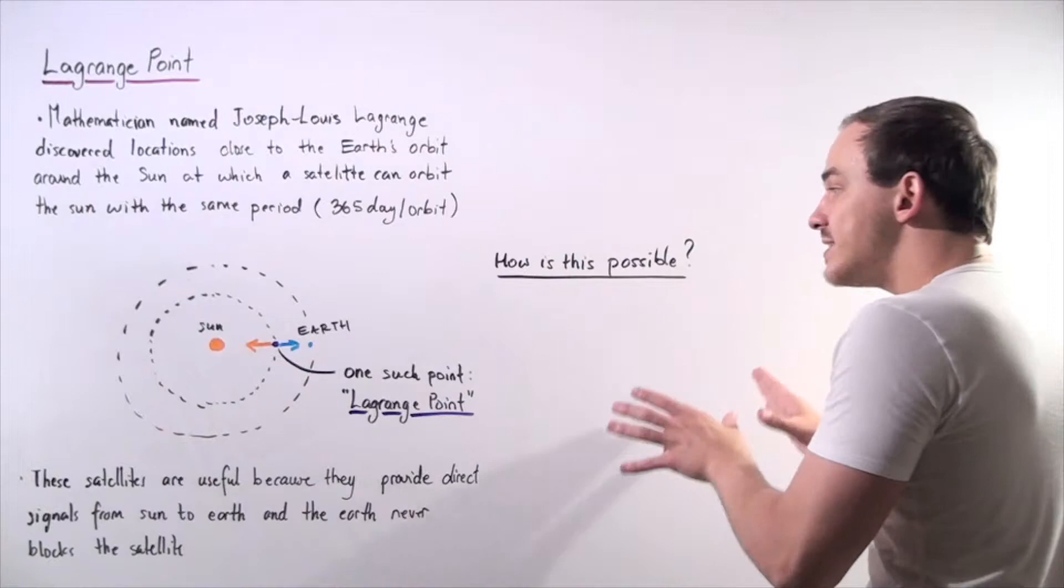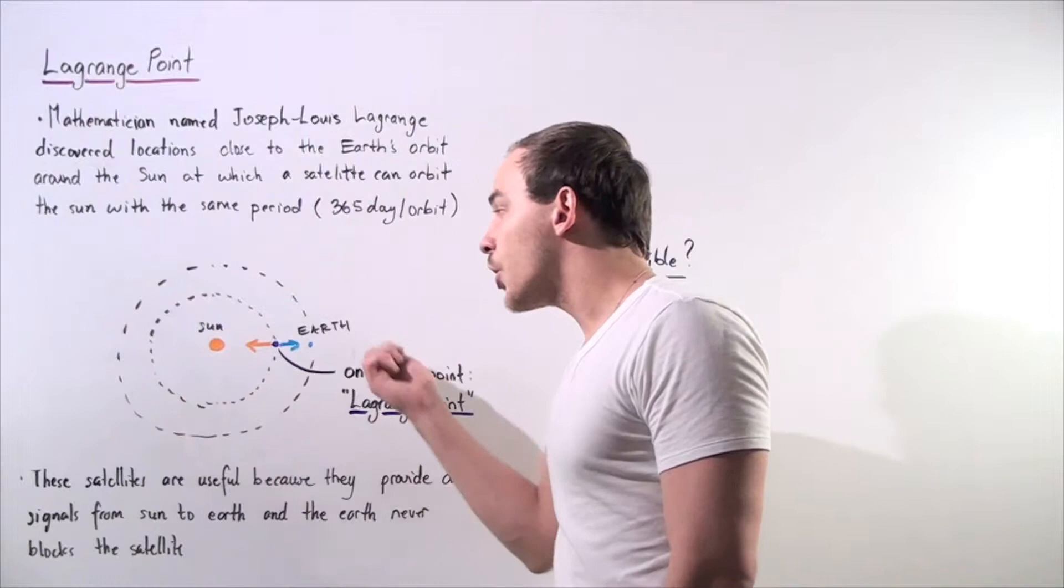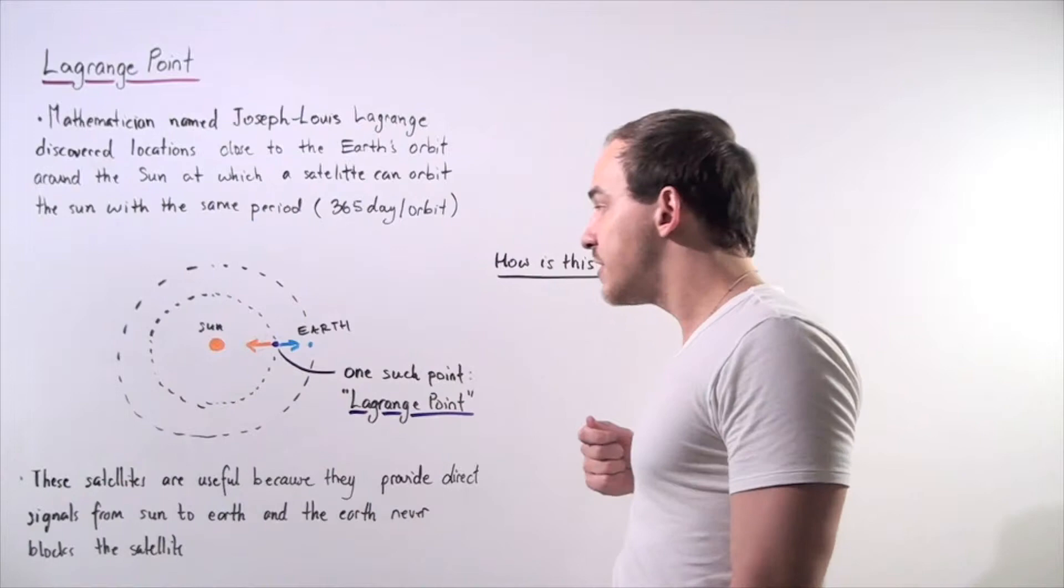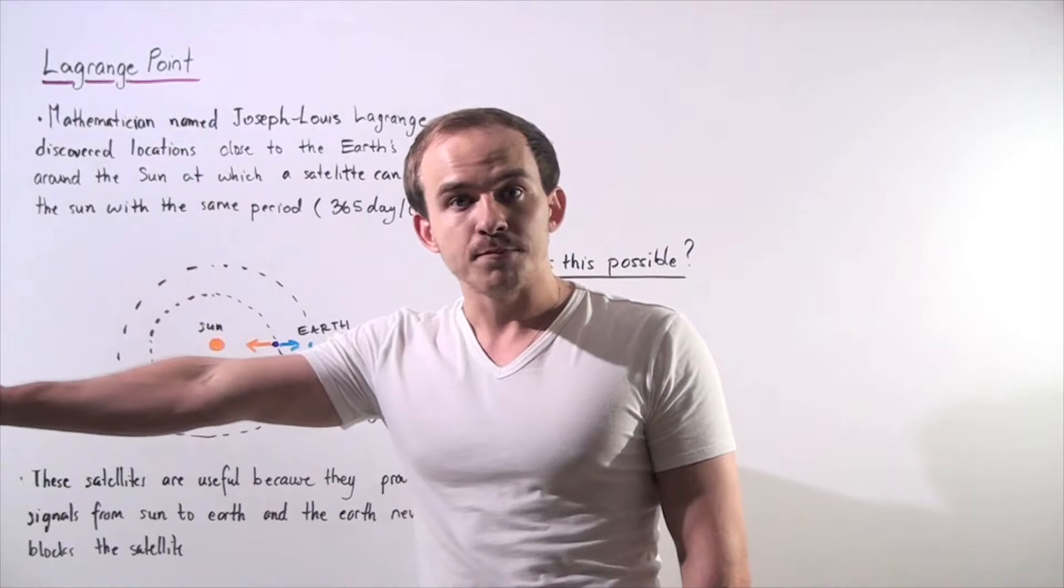Now, how is this actually possible? Well, it's possible because both the sun and the Earth exert a force on the satellite. The Earth pulls on our satellite this way while the sun pulls on the satellite in the opposite direction.